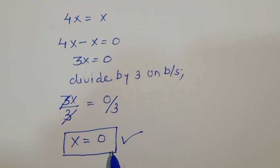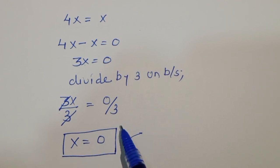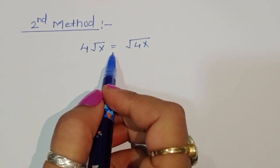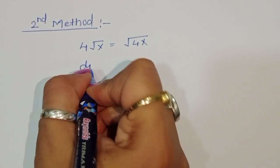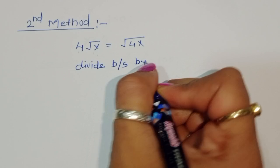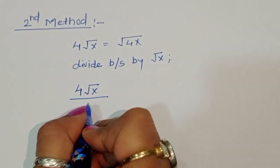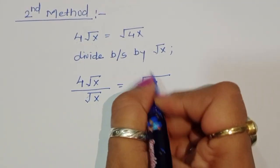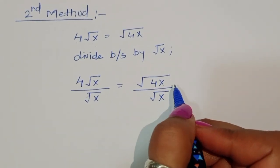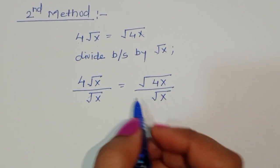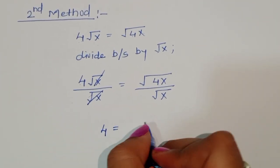That is the first method. Now we solve using the second method. In the second method, starting from 4√x = √(4x), we divide both sides by √x. Then 4√x divided by √x simplifies: √x cancels, giving us 4 on the left side.